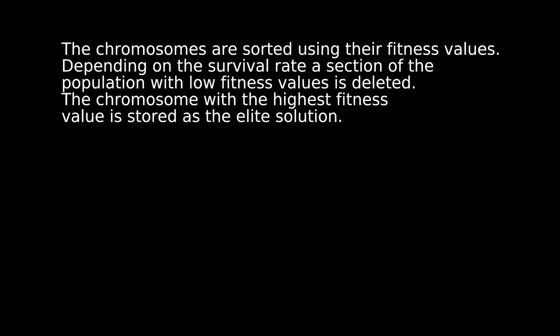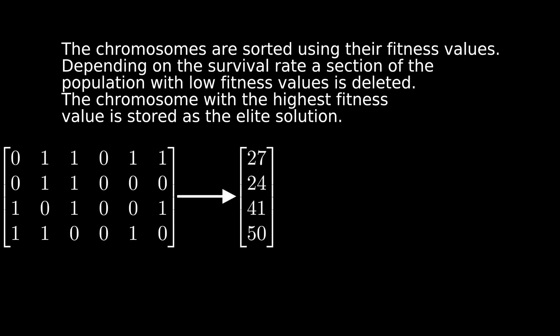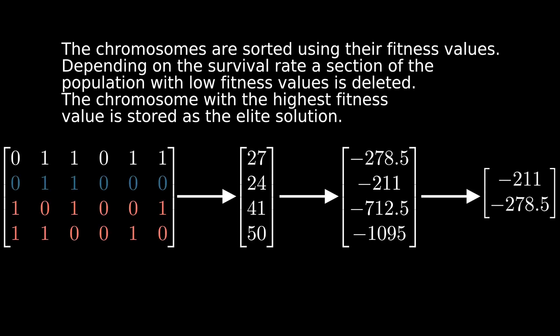The fitness values are calculated for each chromosome in the population by substituting it into the objective function. The chromosomes are first converted to their decimal values, then they're substituted into the objective function. They're then sorted according to their fitness values, and a certain section of the population with low fitness is removed. This is shown in red. The solution with the best fitness is stored as the elite chromosome and is shown in blue. This elite value is the best solution for a given generation.